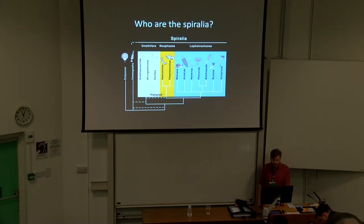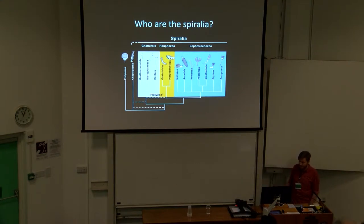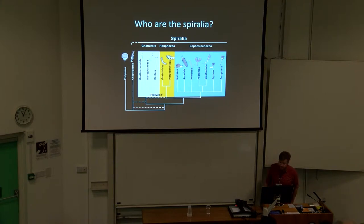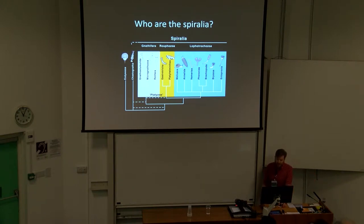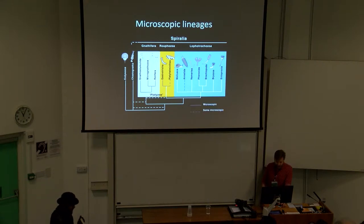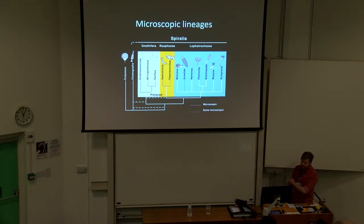For the rest of this talk, I'm going to be talking about meiofaunality as it relates to spiralians. Spiralia is the group I work with most closely. You're probably familiar with the lophotrochozoans or the trochozoans — the familiar groups of animals like mollusks, annelids, nemertians, and brachiopods. But based on recent phylogenomic results, we find that a lot of small-bodied and meiofaunal taxa occur at the base of spiralian phylogeny.